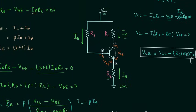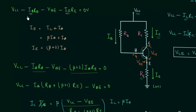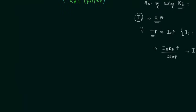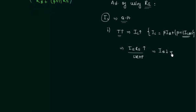From the KVL equation, base current IB equals (VCC minus VBE minus IE·RE) divided by RB. When the drop IE·RE increases, the base current decreases. When base current decreases, the collector current also decreases, since IC equals β·IB. So the increment in collector current due to temperature is equally compensated by the decrement in base current, and temperature no longer has an effect on IC.